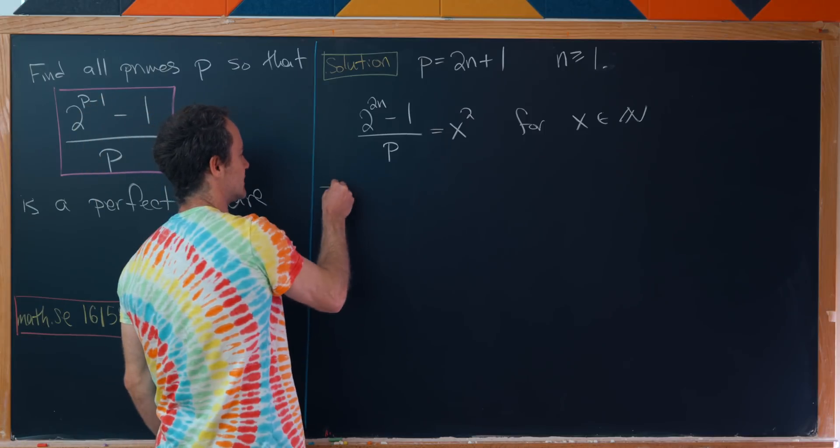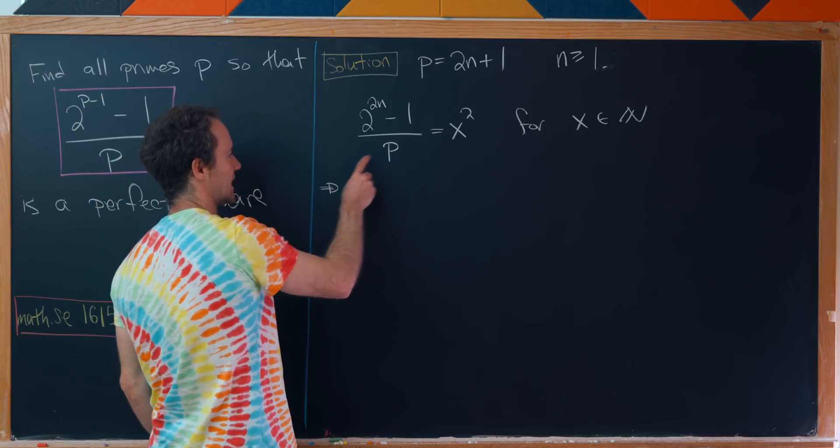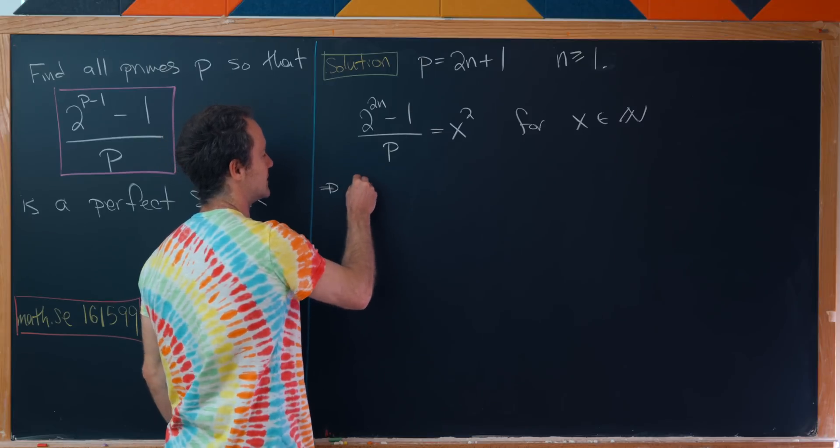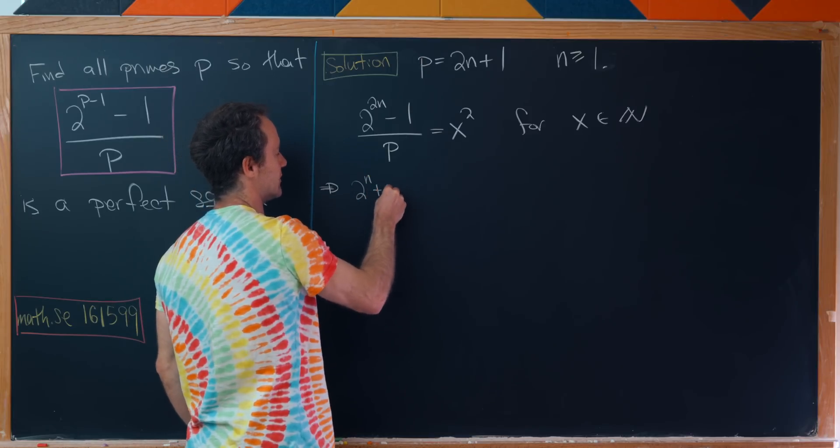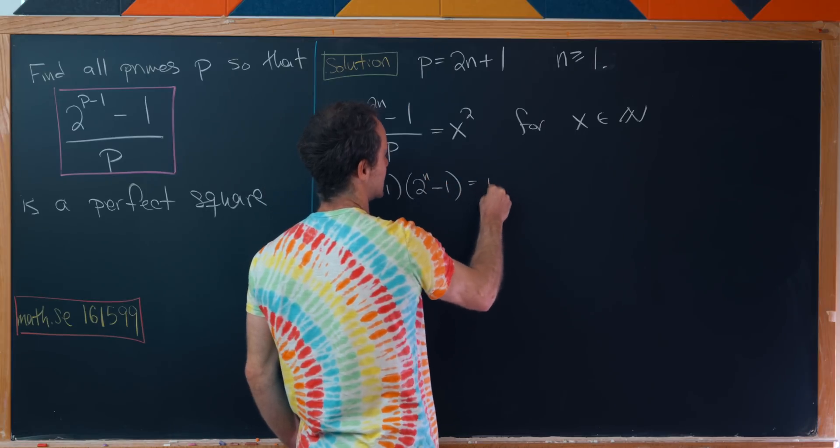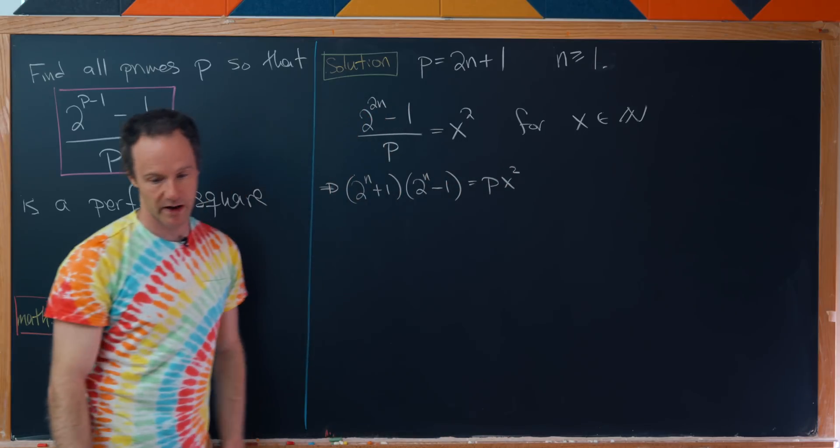Now let's do a little bit of factoring on the left hand side and cross multiply to get the p to the other side. That'll leave us with (2^n + 1)(2^n - 1) equals p times x^2.